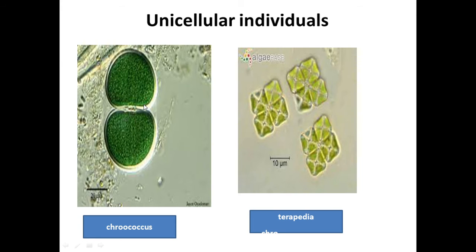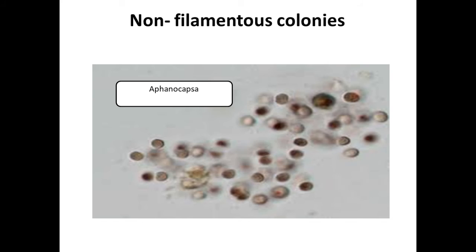Second form is non-filamentous. Examples of non-filamentous form include Aphanothece and Aphanocapsa. Here the colonies are amorphous, and such colonies result from the confluence of the gelatinous envelope which surrounds the individual cells. Here you can see these cells in Aphanocapsa under light microscope showing non-filamentous colonies.